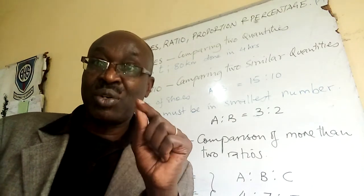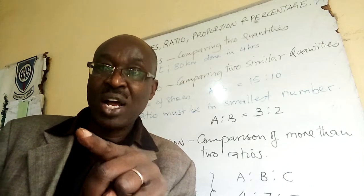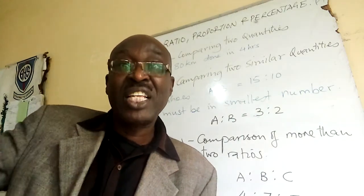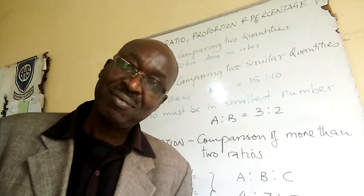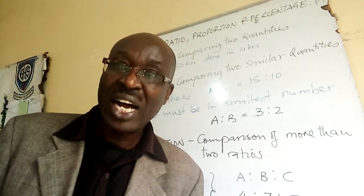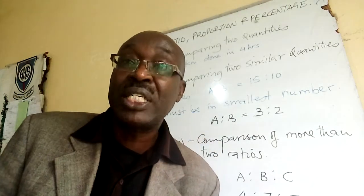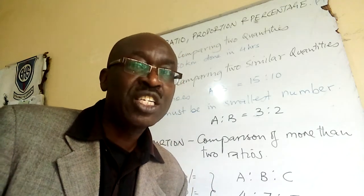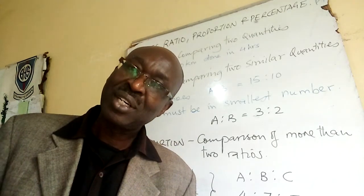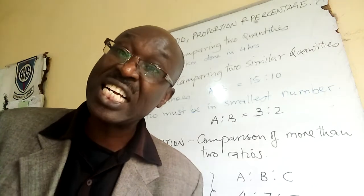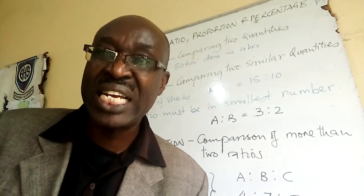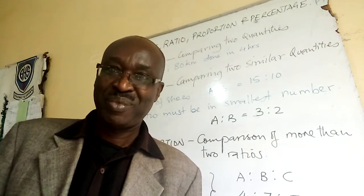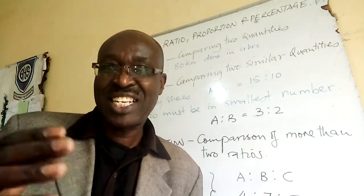You can see the two quantities. One is distance — 80 kilometers — and I'm comparing it with the time I took: four hours. Another example: loss of kilograms in a given number of weeks, e.g., losing 5 kilograms in 10 days. So you see, there is mass and there is time — one quantity is mass, the second quantity is time.